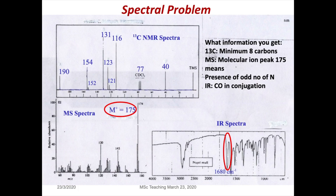So this is the information you got from the mass spectrum. Now if you look at the IR spectrum, it shows a stretching frequency at 1680 cm⁻¹, which means you have a carbonyl group that is in conjugation with something.